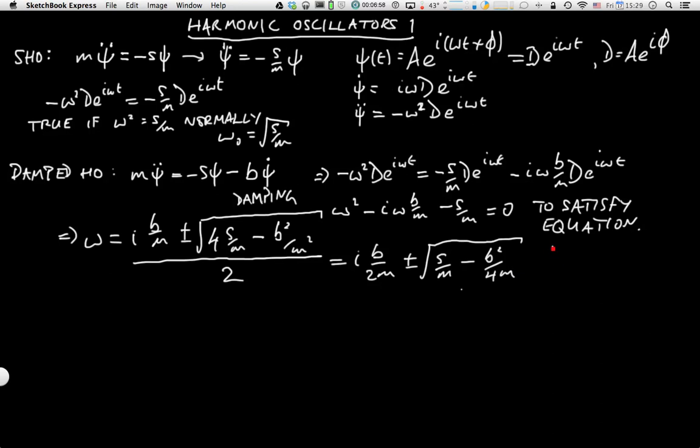I'm going to introduce two new terms. Gamma, which is b over 2m, that's a measure of how strong the resistance term is relative to the mass. And omega zero is the square root of s over m. So we get ω equals iγ plus or minus the square root of ω₀² minus γ².